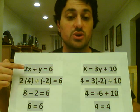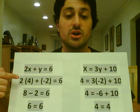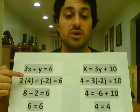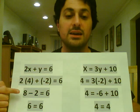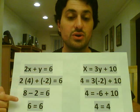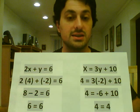What we had was 2x plus y equals 6, which now becomes 2 times 4 plus negative 2 equals 6. Or 8 minus 2 equals 6. Or 6 equals 6. Sounds good.